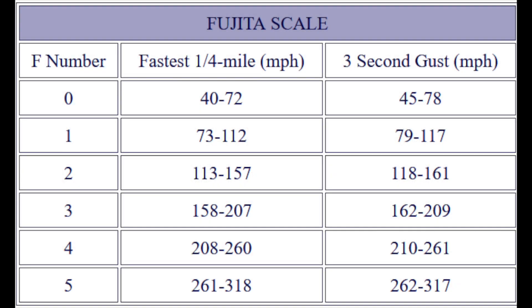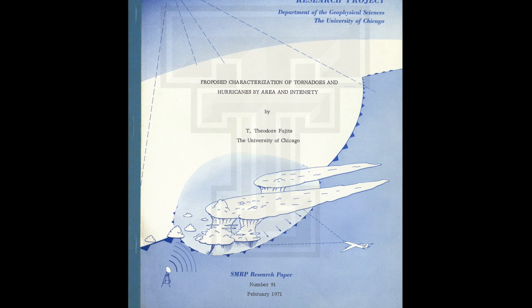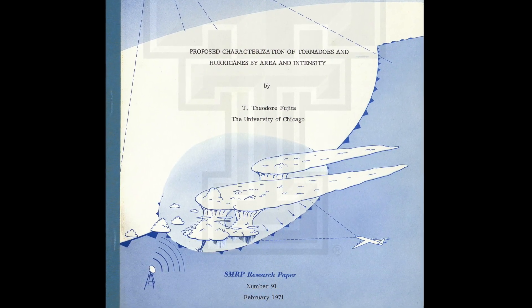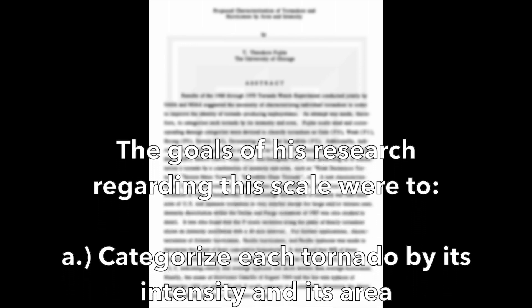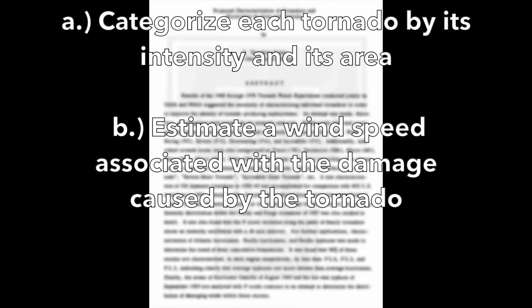So what is the F scale and how did it develop? The Fujita scale identifies damage caused by a tornado and relates the damage to the fastest quarter-mile wind at the height of a damaged structure. Although Dr. Ted Fujita was doing lots of research on tornadoes starting in the 1950s, it was in February of 1971 that he first introduced the Fujita scale in SMRP Research Paper No. 91, titled 'Proposed Characterization of Tornadoes and Hurricanes by Area and Intensity.' The scale was divided into six categories: F0 gale force, F1 weak, F2 strong, F3 severe, F4 devastating, and F5 incredible.